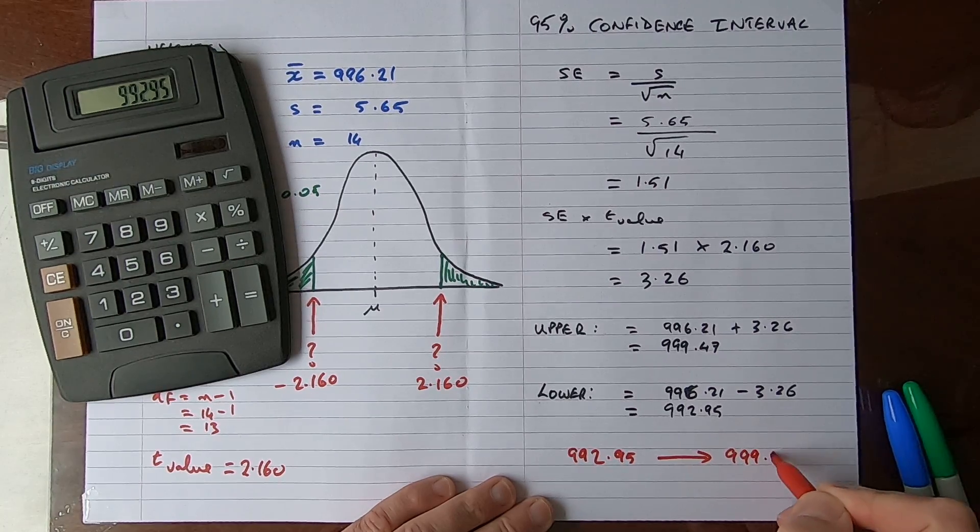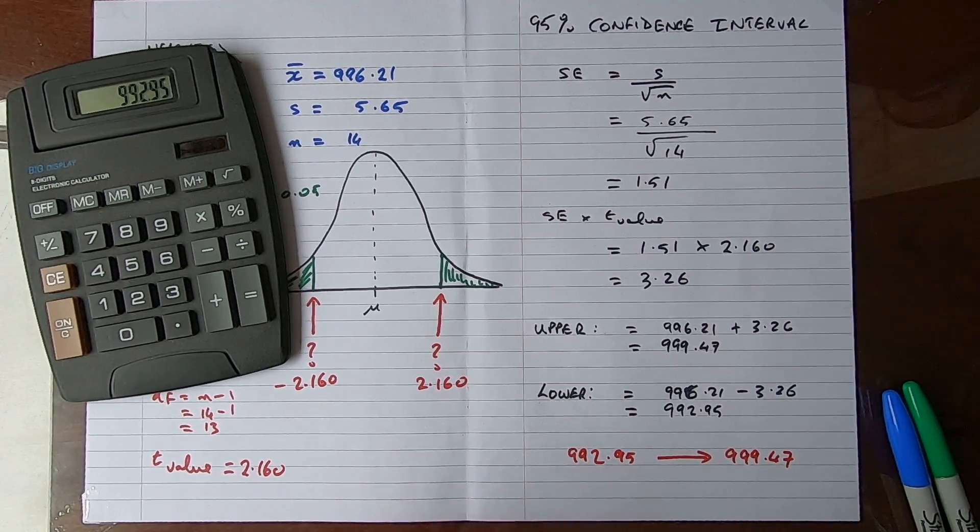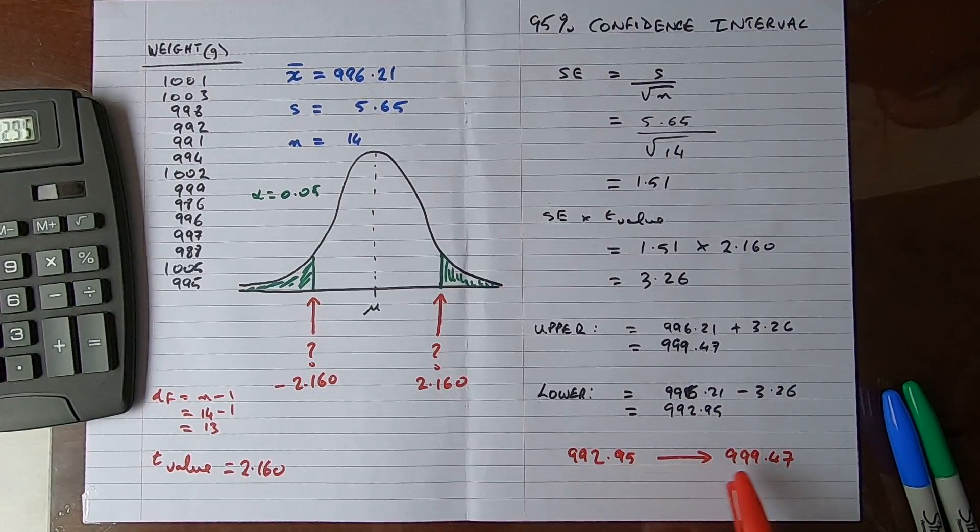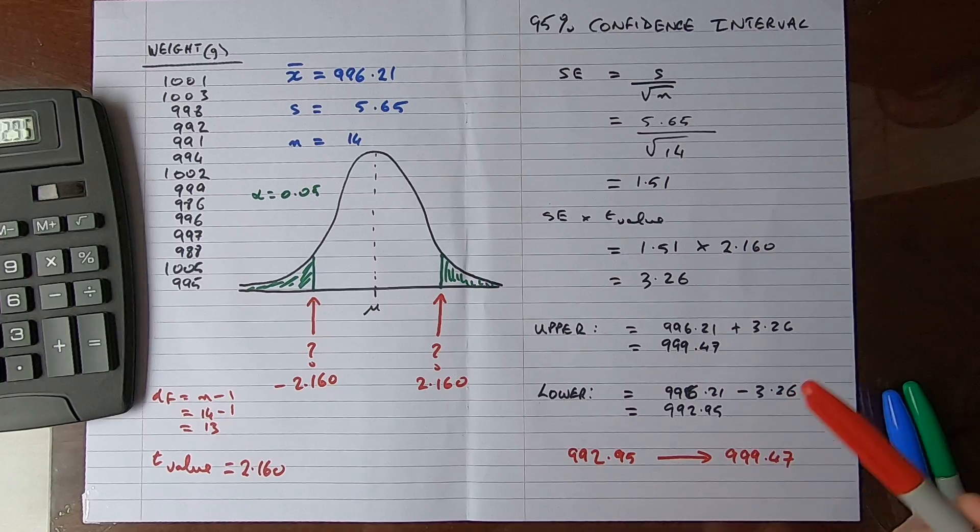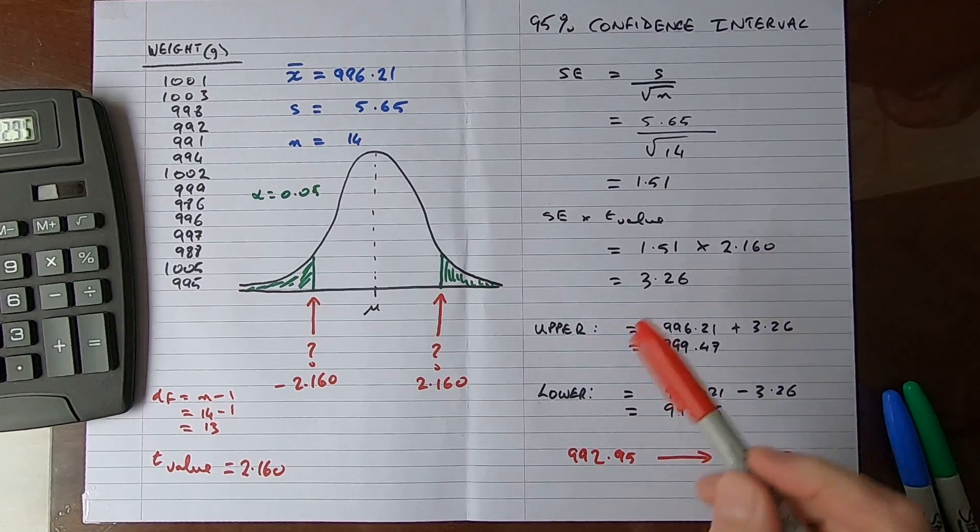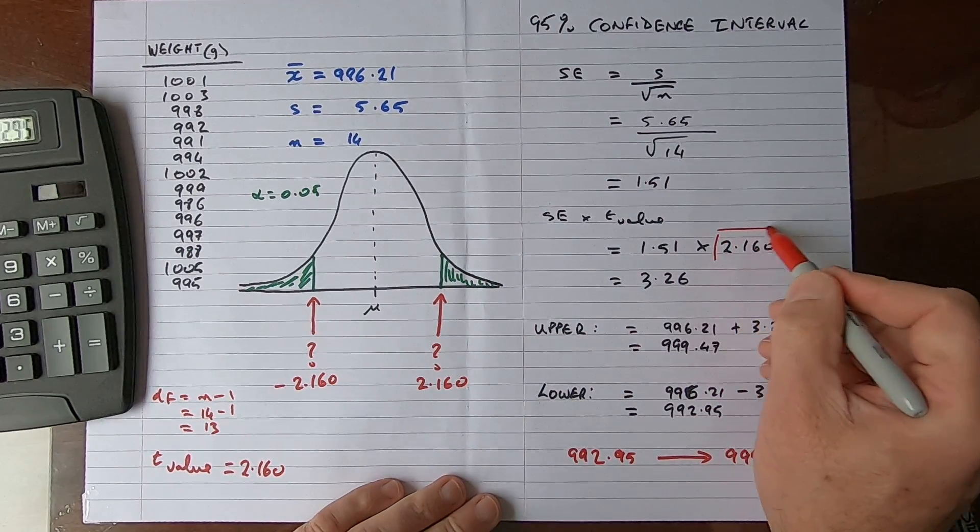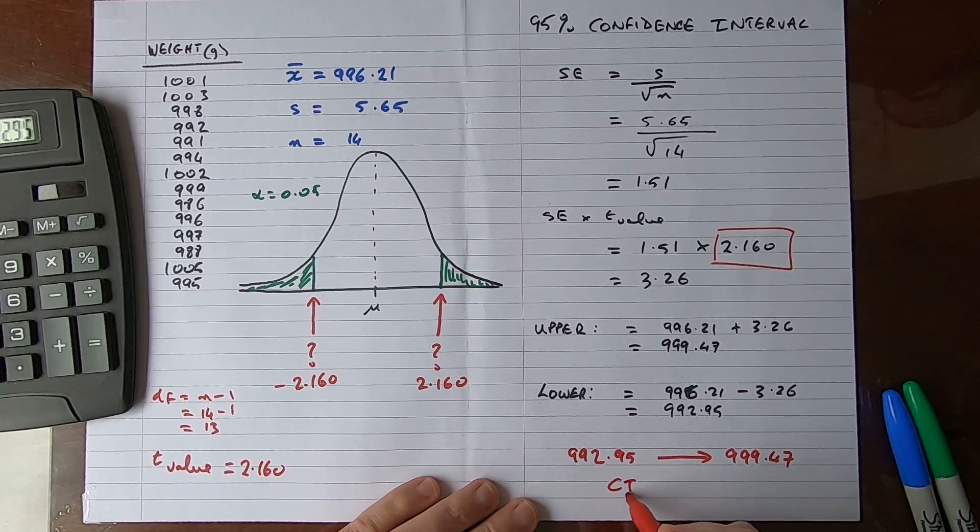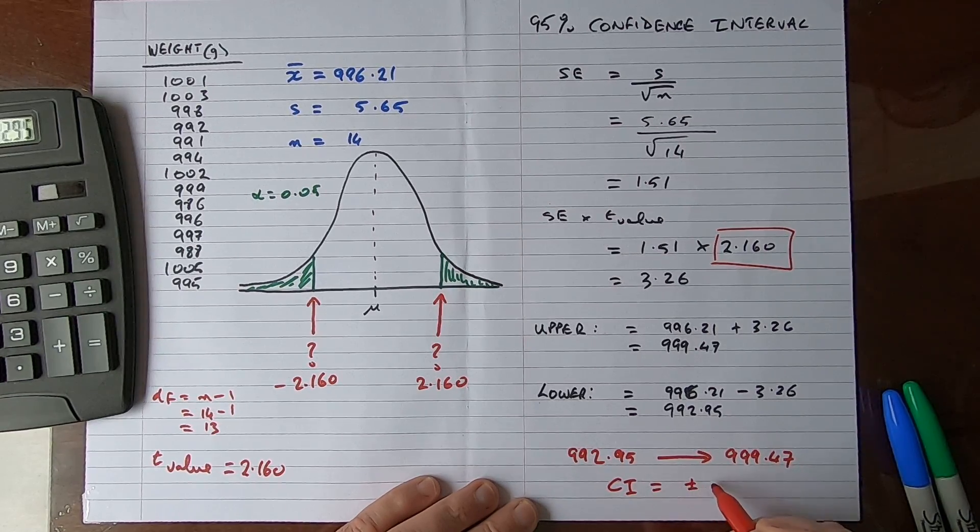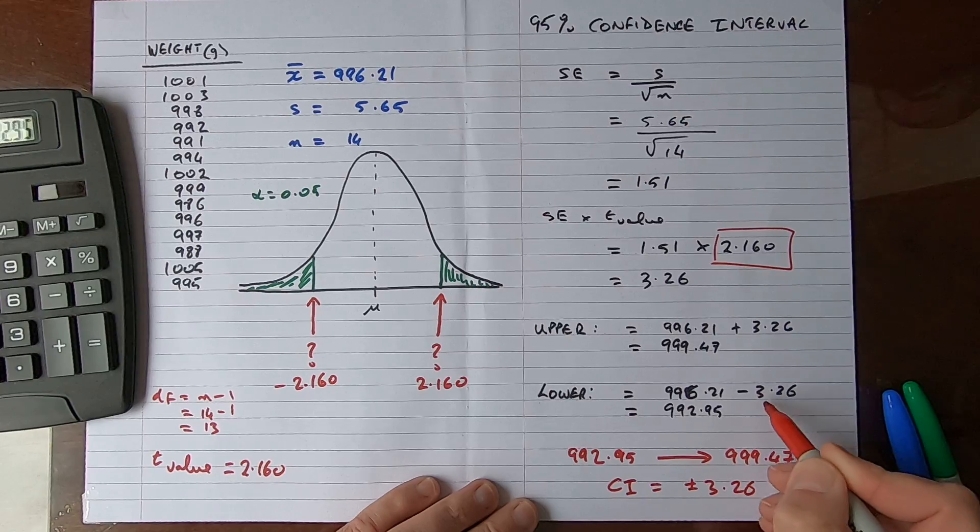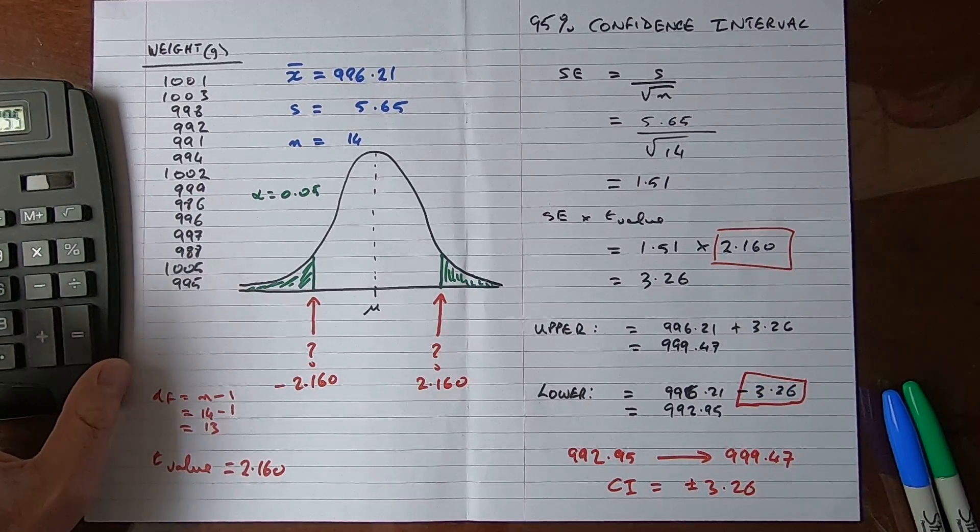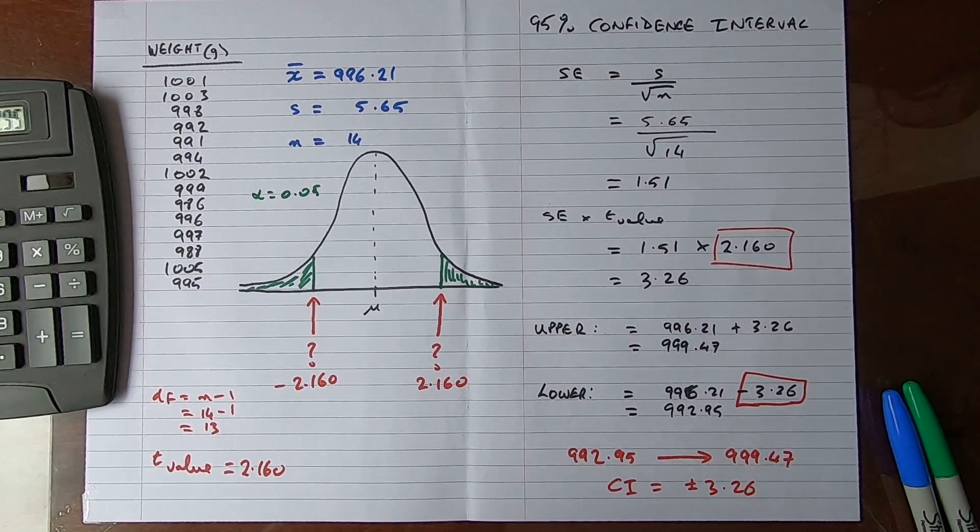So my confidence interval for the mean is my lower limit 992.95 up to my upper limit 999.47. I can now say with 95% confidence that the population mean lies between these two values. If I wanted 99% confidence, only the t value would change to a higher value and this margin would widen. Our CI equals plus or minus 3.26. That's how you calculate the confidence interval for a sample. I hope you found this video useful, thank you for your attention.